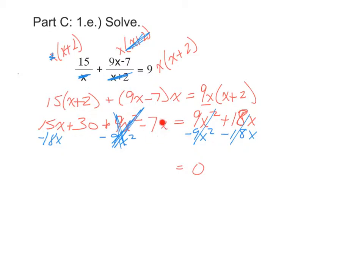When I combine all of my x's, the 15x minus 18x is negative 3x, and I still have this minus 7x. So negative 3 minus 7 is negative 10x. The only constant term is that plus 30.